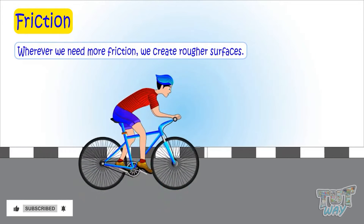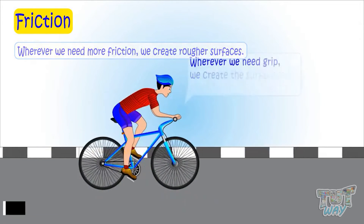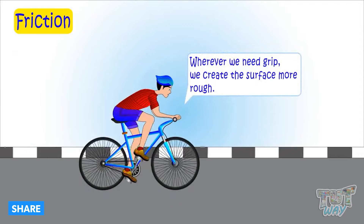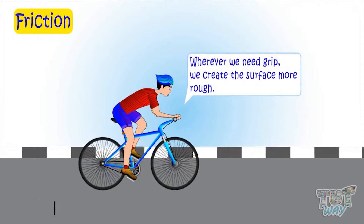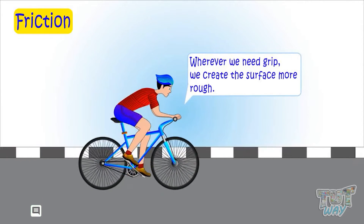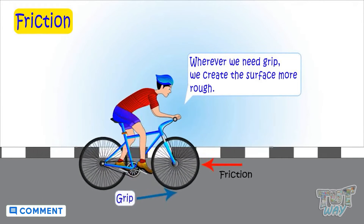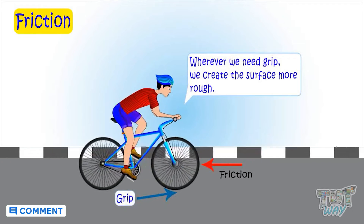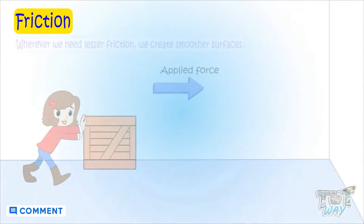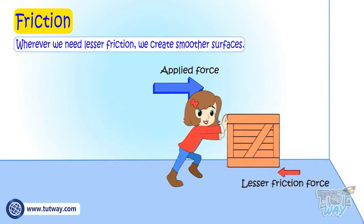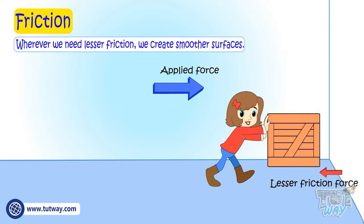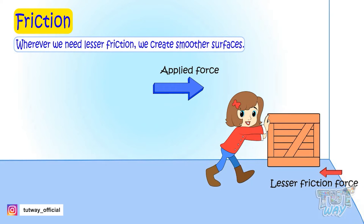Whenever we need more grip we make surfaces rough so that there is more friction and more grip. And wherever we need two objects to slide past each other, we create lesser friction by making the surfaces of objects very smooth.